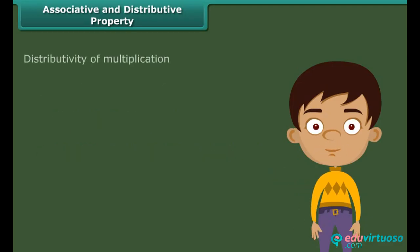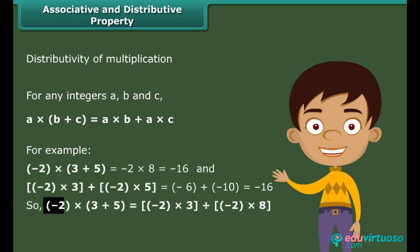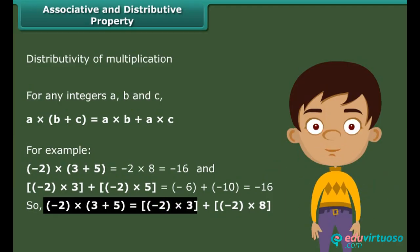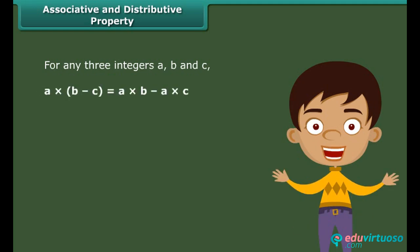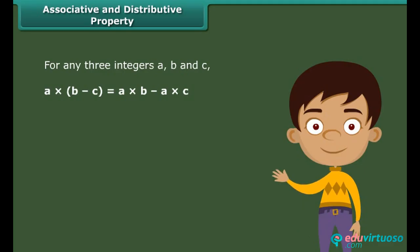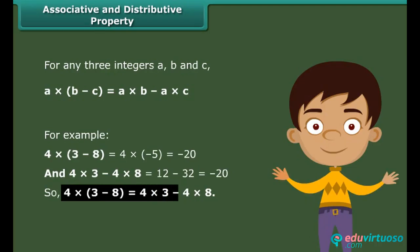Now let us move towards the distributive property of multiplication. For any integers A, B and C: A times (B plus C) equals A times B plus A times C, and A times (B minus C) equals A times B minus A times C. For example: 4 times (3 minus 8) equals 4 times 3 minus 4 times 8.